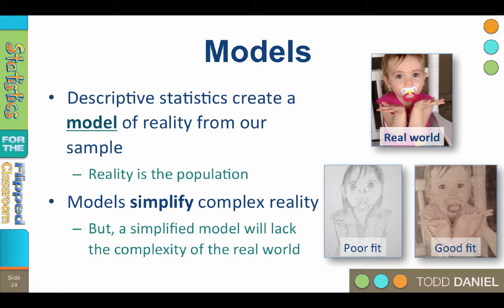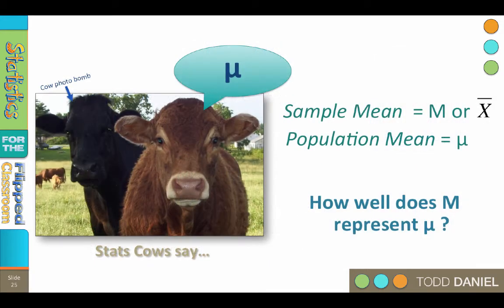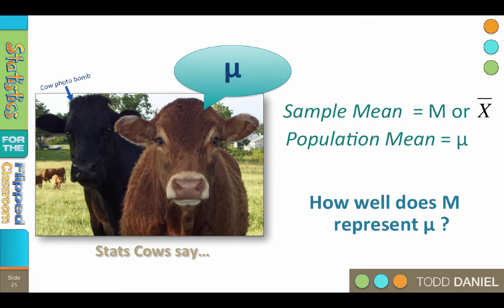Descriptive statistics create a model of the population using what we learned from our sample. Every measurement in our sample tells us something about the population, i.e., reality. One such descriptive statistic that works well as a model for reality is the mean. What we learn from our sample mean, m or x-bar, can tell us a lot about the population mean that we have not actually measured. The population mean is called mu. We want to know how well does our model, m, represent mu.